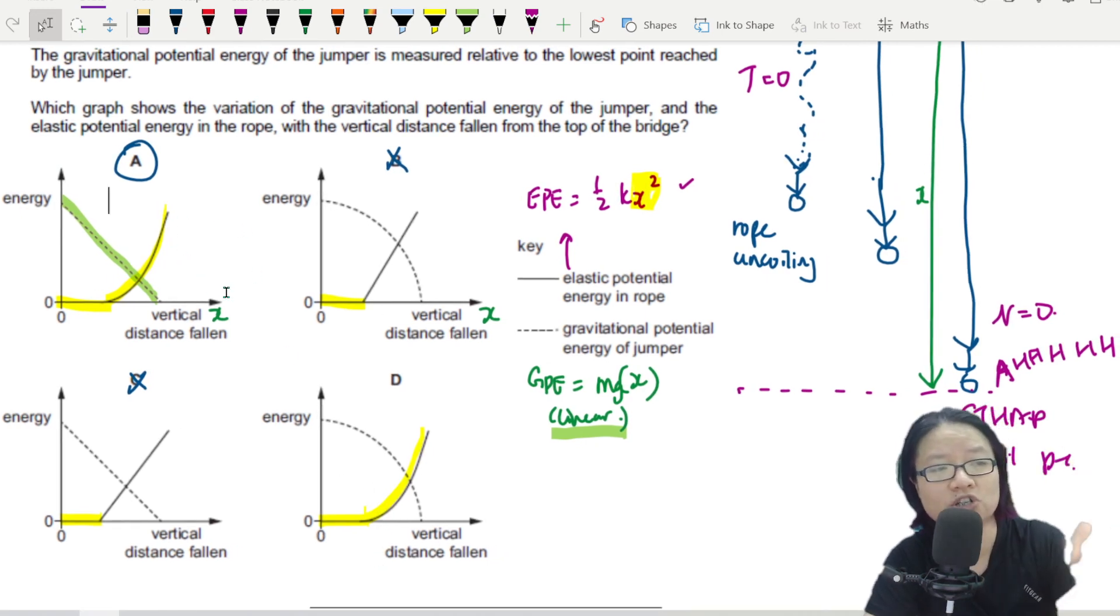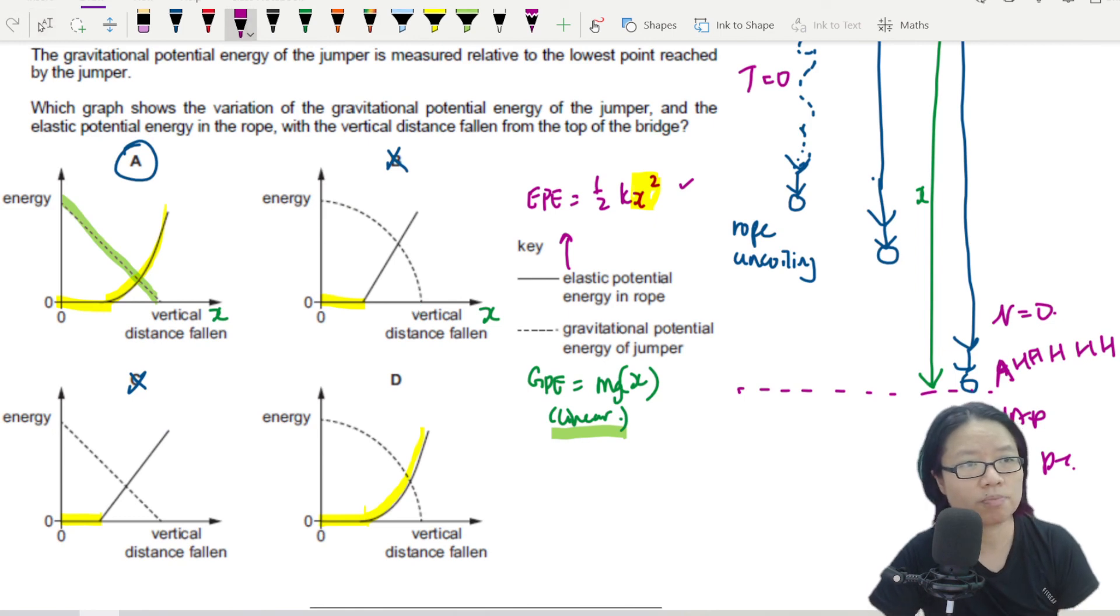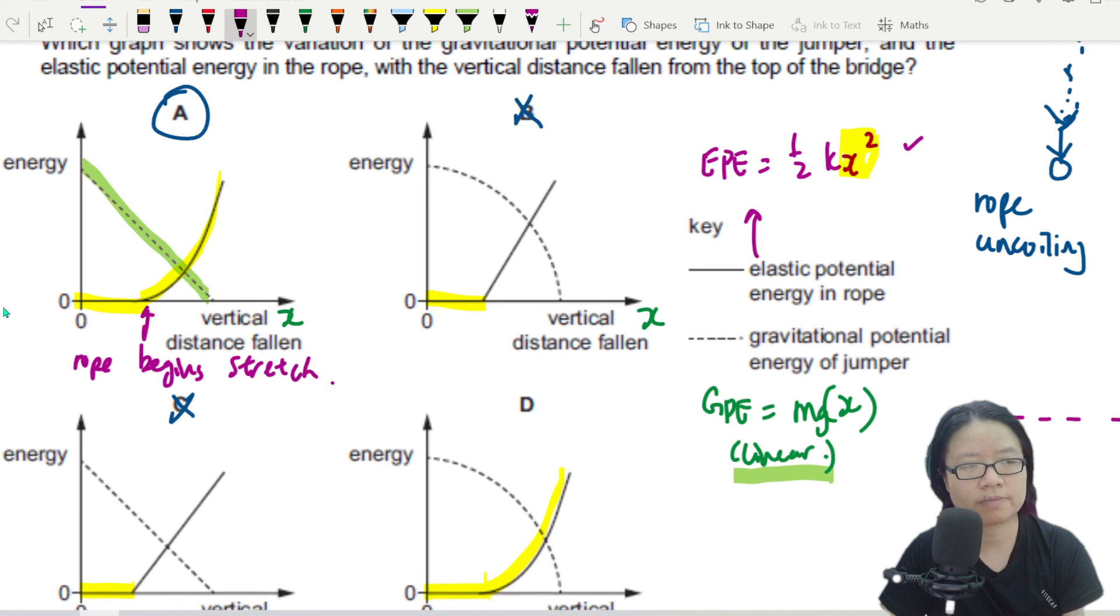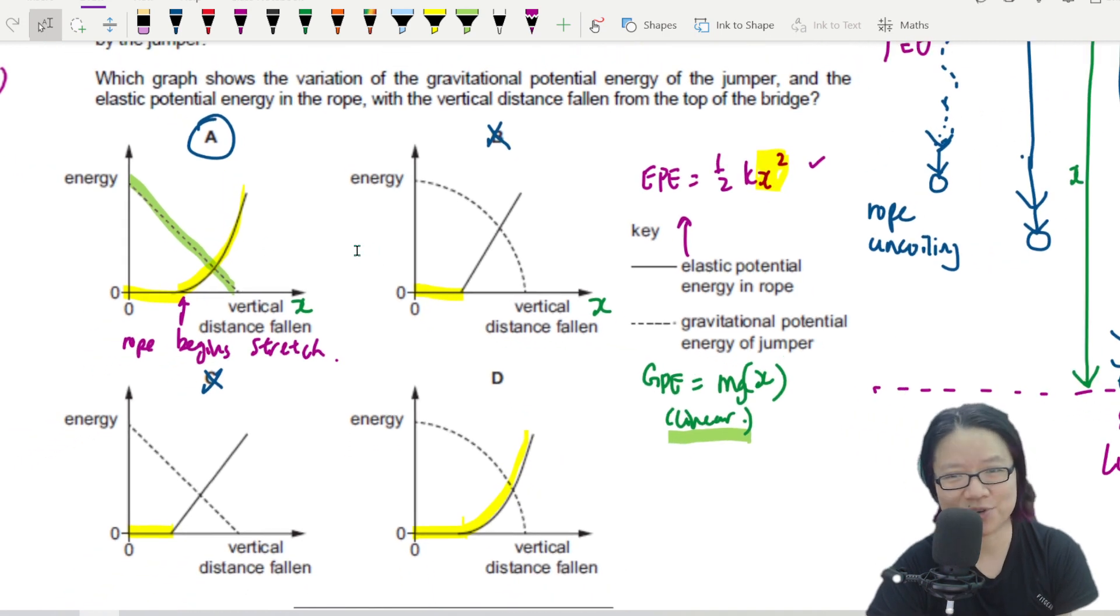But if let's say I give you some situation where the energy increase, decrease, the trend is different, then you may need to analyze. But it kind of makes sense. The elastic potential energy is zero, and then reach a point here where the rope begins to stretch. Here is where the rope begins stretching. So it will stretch in the relationship of x squared, the increase in elastic PE. And also at the same time, the GPE will decrease. Now, I want you to think about how does the KE graph change, the kinetic energy graph. You think about it. I will see you in the next video. Bye-bye.